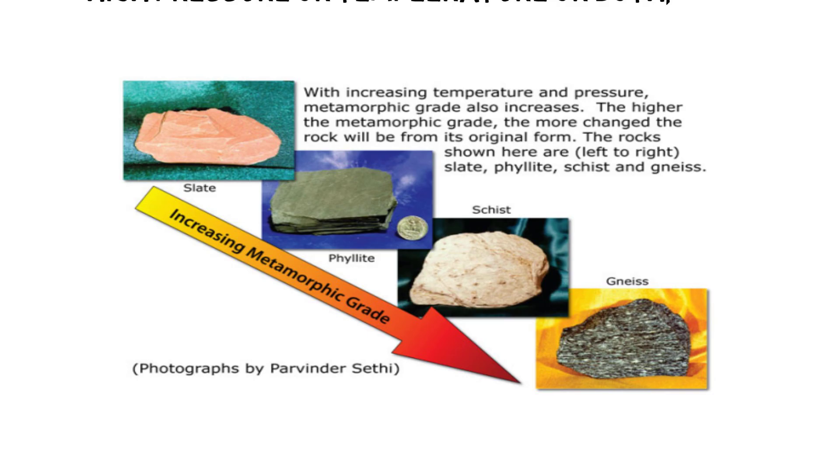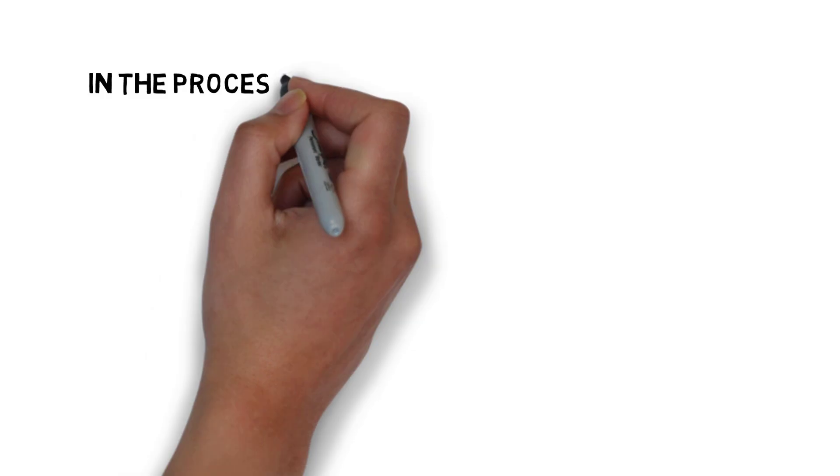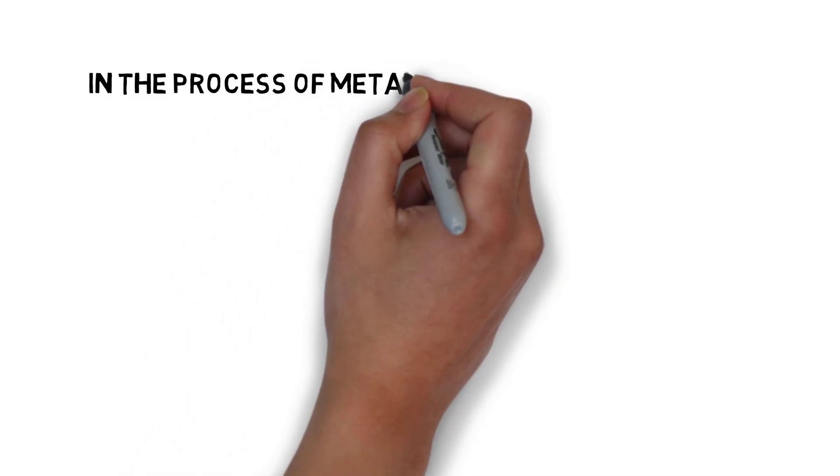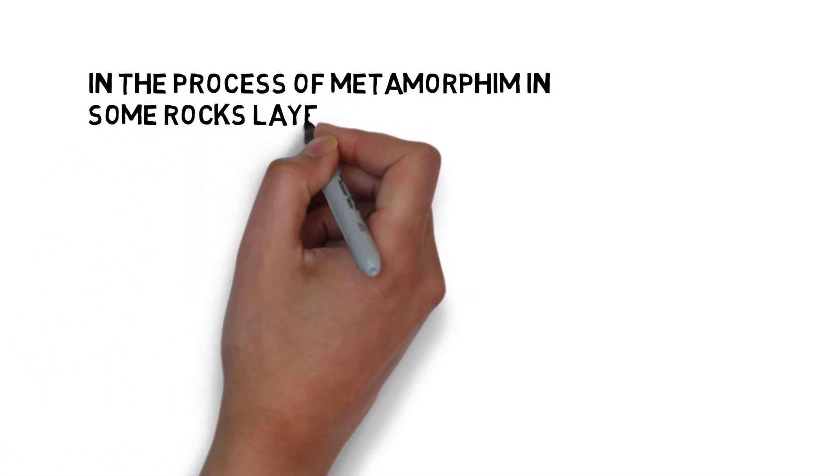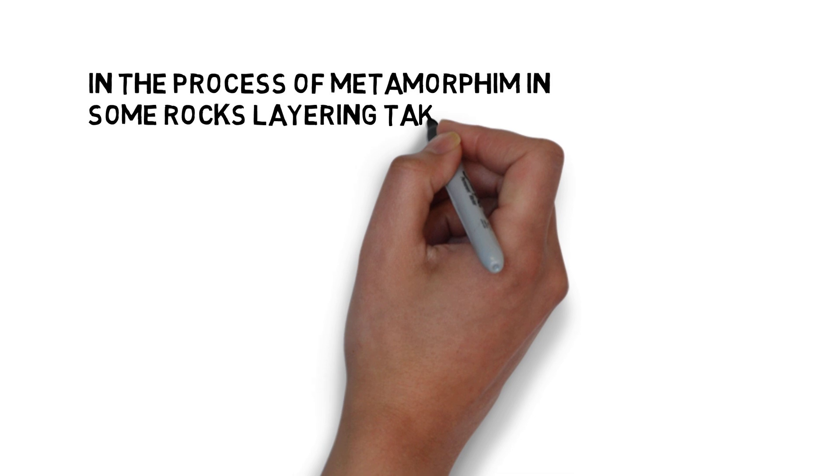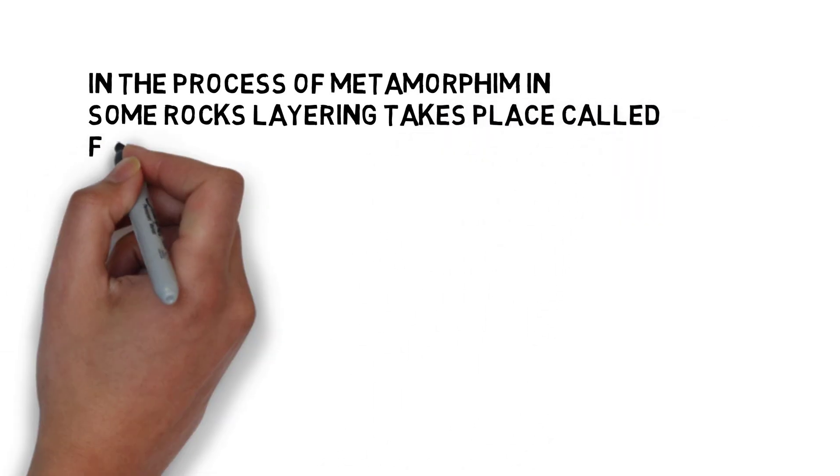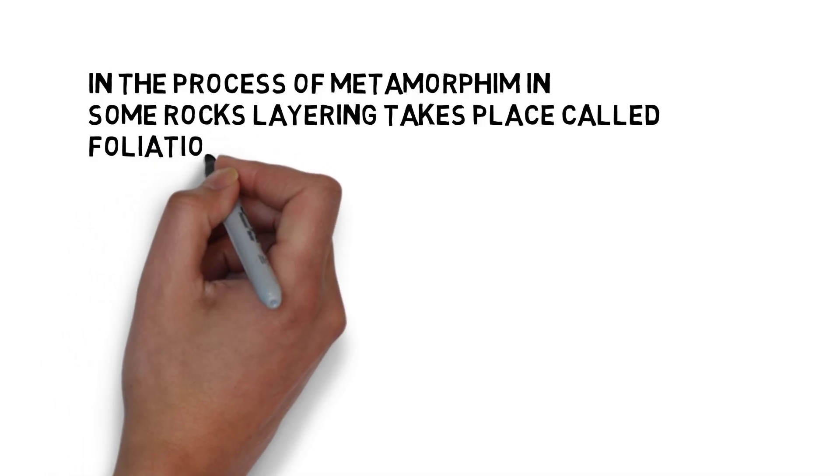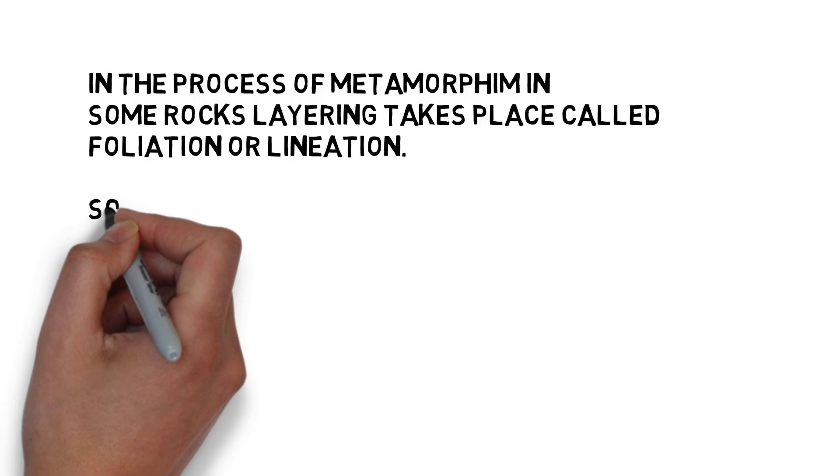In the process of metamorphism, in some rocks, grains or minerals get arranged in layers or lines. Such an arrangement of minerals or grains in metamorphic rock is called foliation or lineation. And sometimes minerals or materials of different groups are arranged into alternating thin to thick layers appearing in light and dark shades. Such a structure in metamorphic rock is called banding, and rocks displaying banding are called banded rocks.